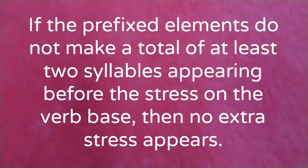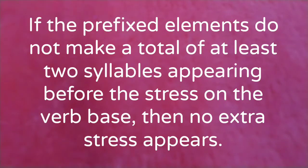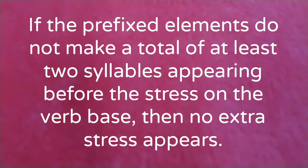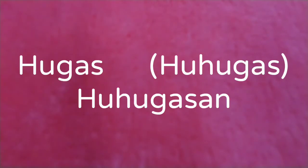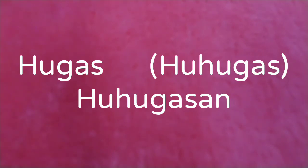If the prefix elements do not make a total of at least two syllables appearing before the stress on the verb base, then no extra stress appears. For example: ho-ugs, huhugas, ho-ho-gas, uhugasan; g-ibo.